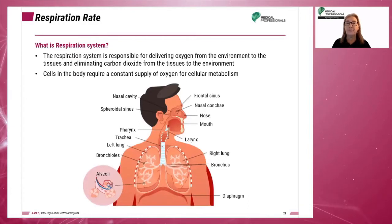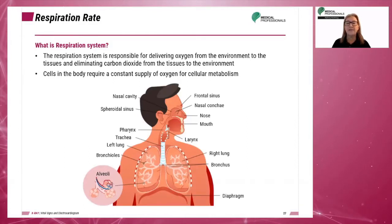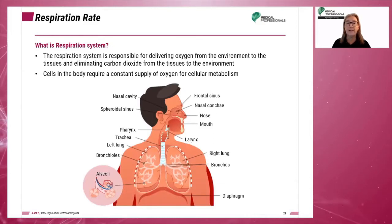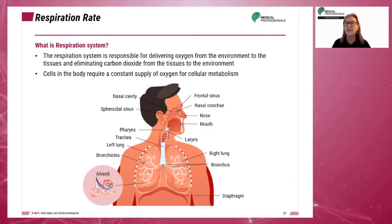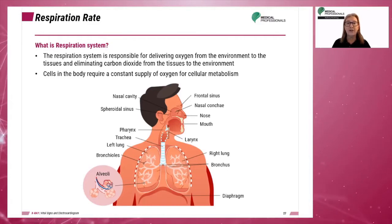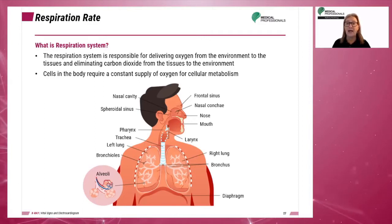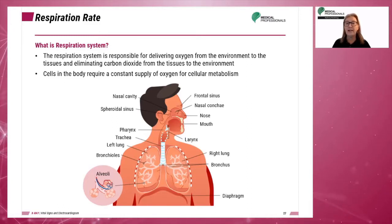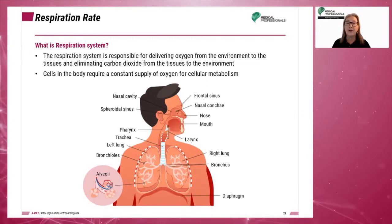External respiration is the exchange of gases in the lungs and is physiologically a result of differences in pressure inside and outside the lungs. The respiratory system is responsible for delivering oxygen from the environment to the tissues and eliminating carbon dioxide from the tissues to the environment. Cells in the body require a constant supply of oxygen for cellular metabolism.